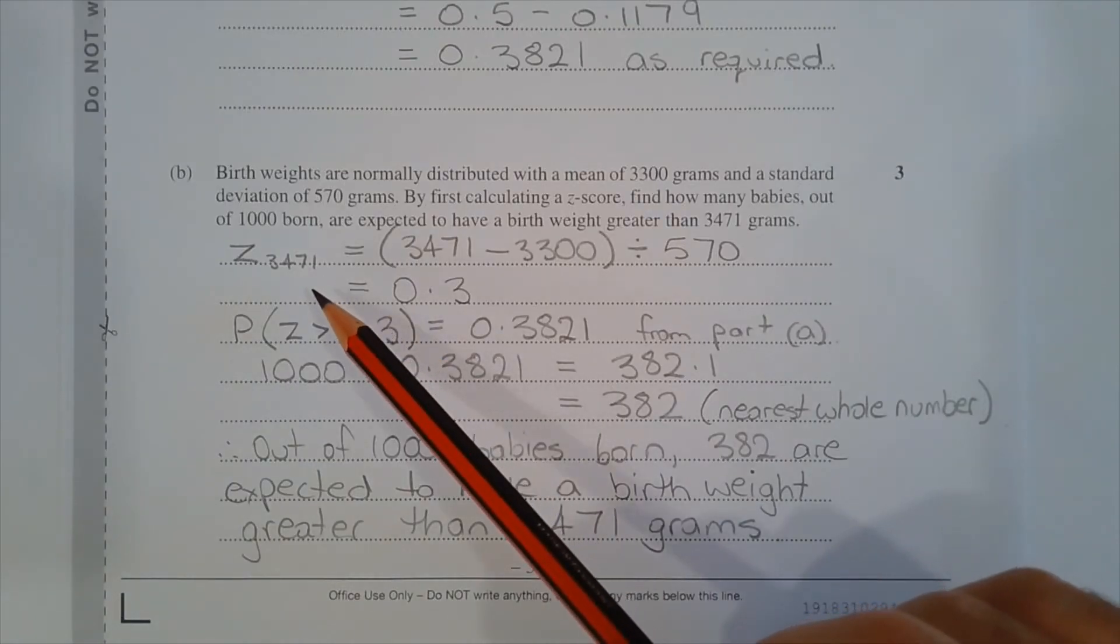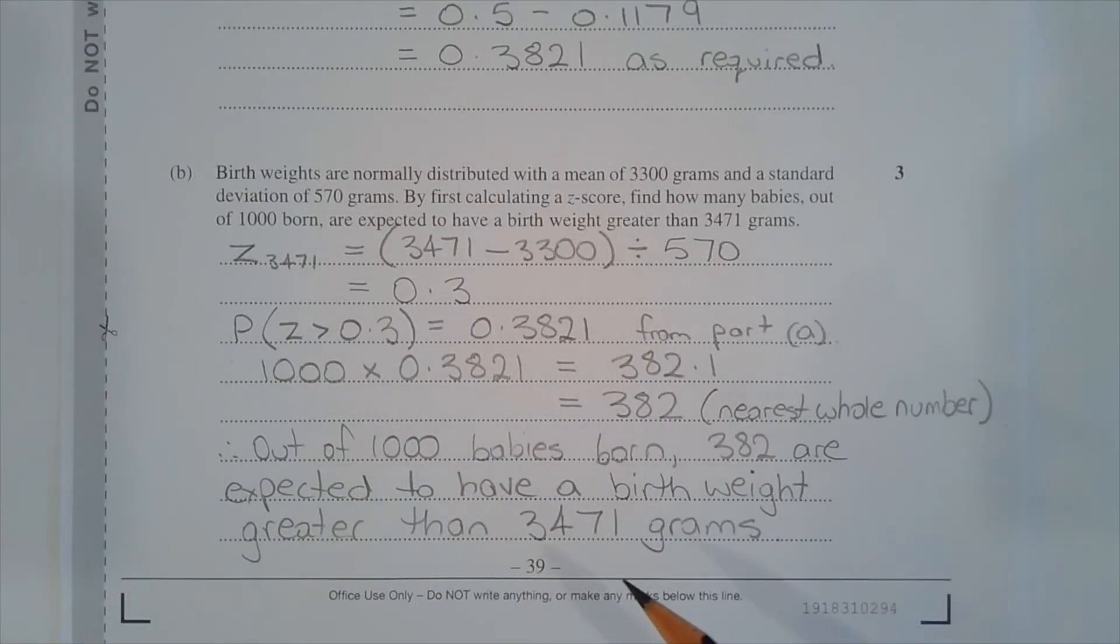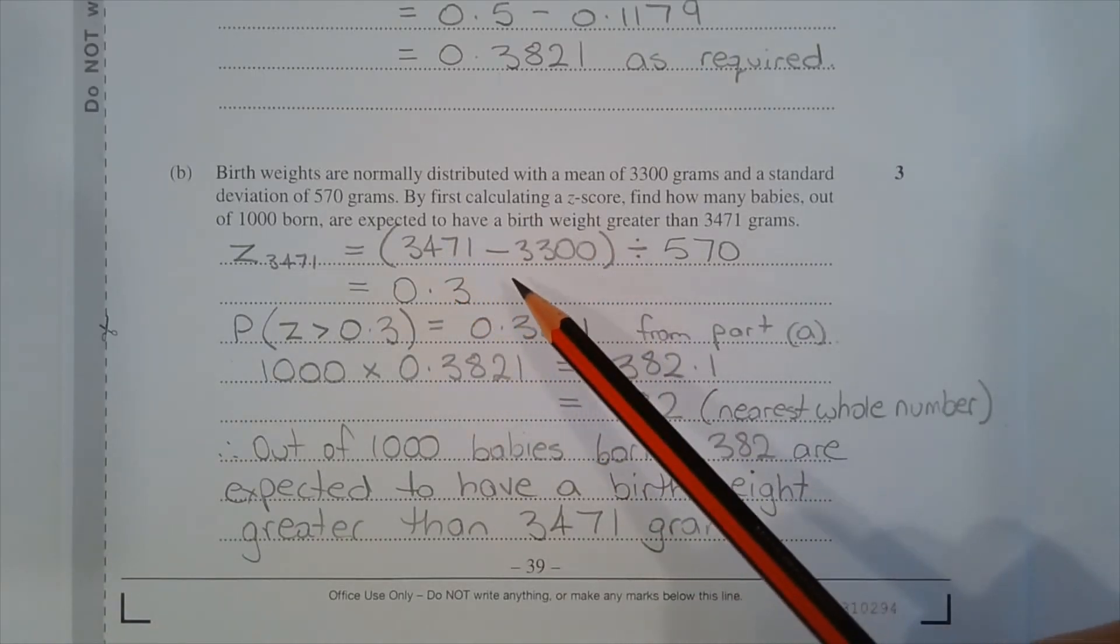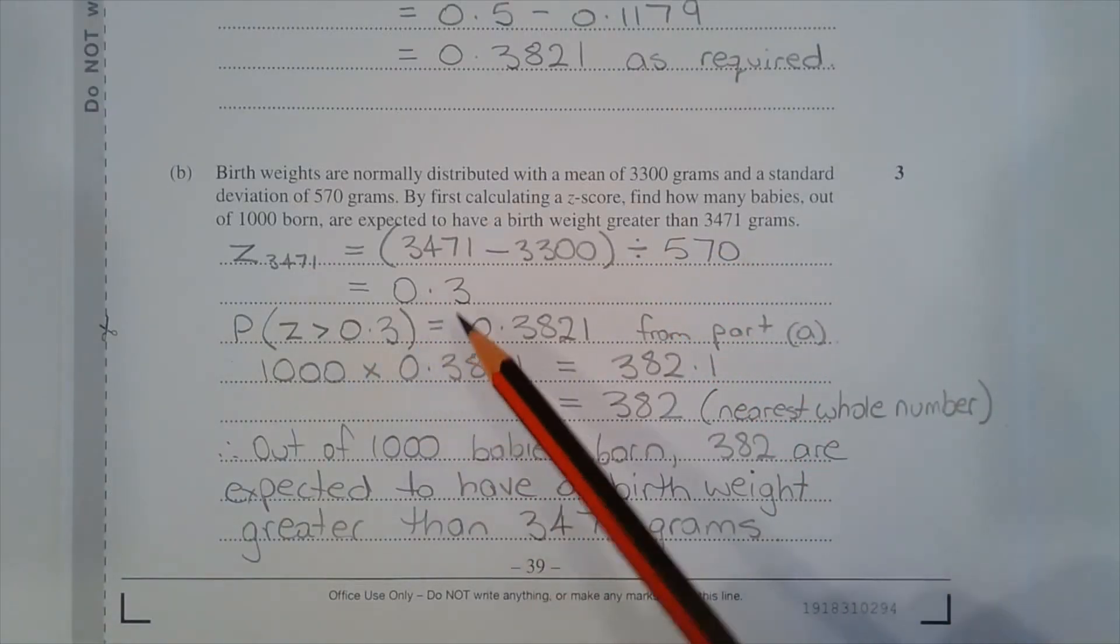The z-score corresponding to a birth weight of 3471 grams is found using the z-score formula: 3471 minus the mean of 3300, divided by the standard deviation of 570, which equals 0.3.